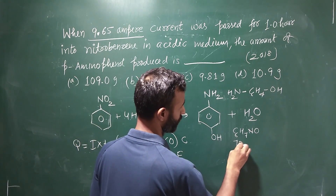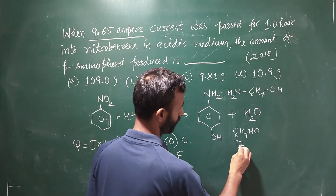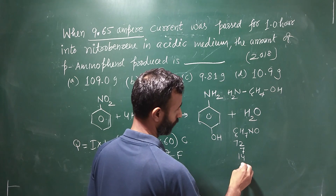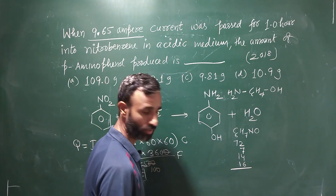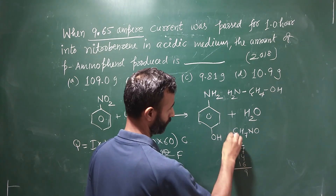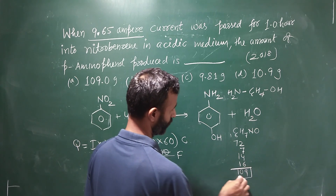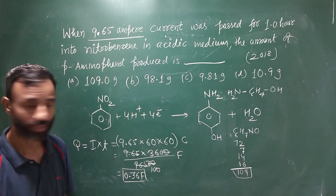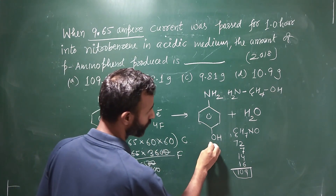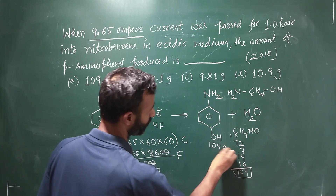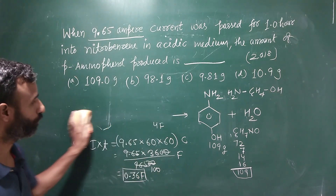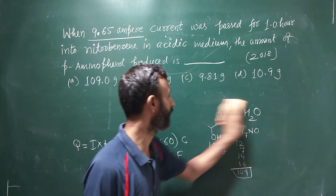The molecular weight of para-aminophenol: 72 from carbon, 7 from hydrogen, 14 from nitrogen, and 16 from oxygen — total 109 g/mol. This means that if we pass 4 faraday of electricity, the deposit will be 109 grams.